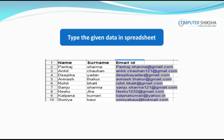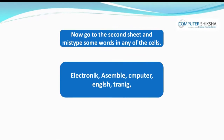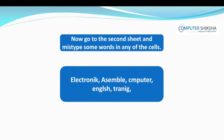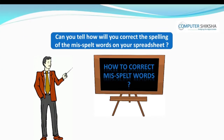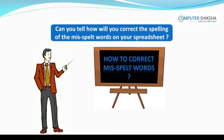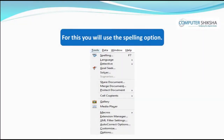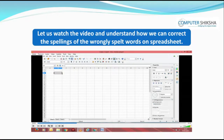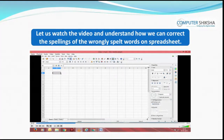Type the data being shown to you in your spreadsheet document. Now go to the second sheet and mistype some words in any of the cells. Can you tell how you will correct the spelling of the misspelt words on your spreadsheet? For this, you will use the spelling option. Let us watch the video and understand how we can correct the spellings of wrongly spelt words on the spreadsheet.